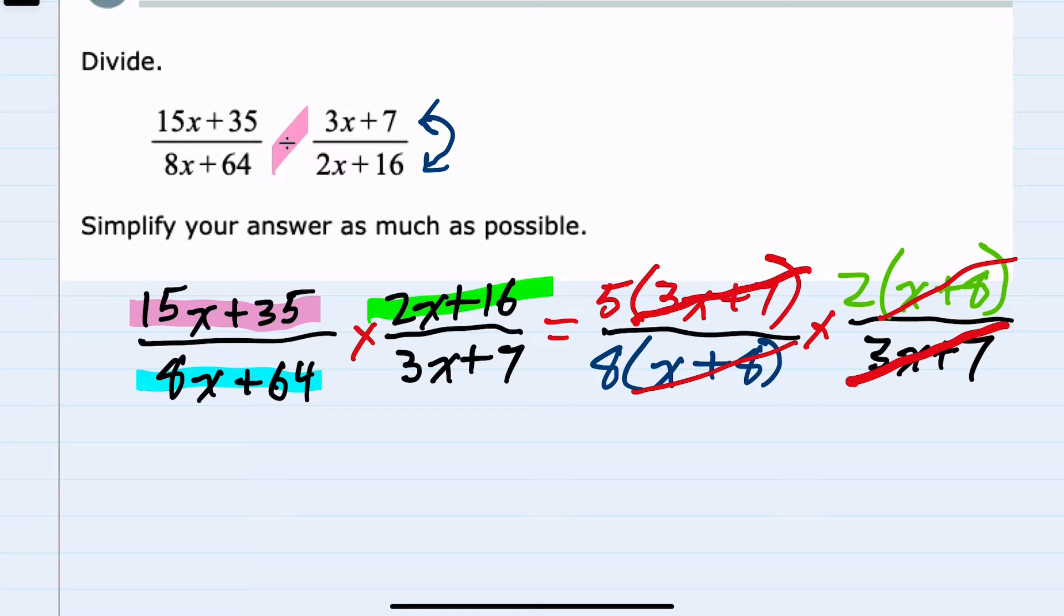And then for the numbers, we also have a 2 in the numerator and an 8 in the denominator. 2 goes into 2 once and 2 also goes into 8 here 4 times. So we have done a lot of canceling.